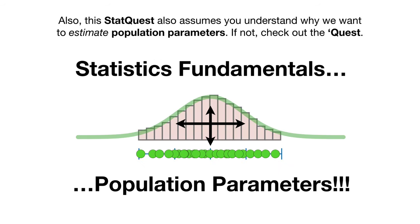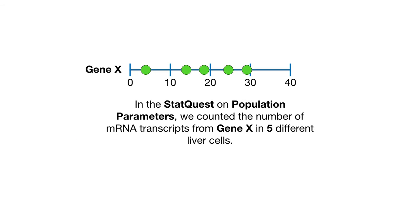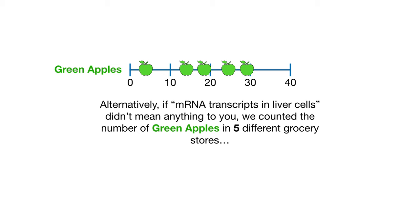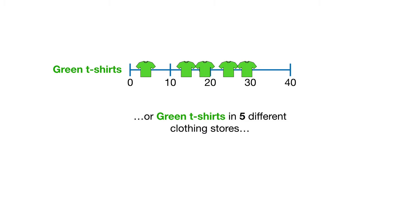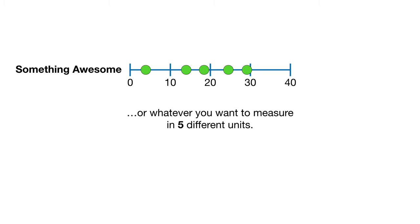Also, this StatQuest assumes you already understand why we want to estimate population parameters. If not, check out the quest. In the StatQuest on population parameters, we counted the number of mRNA transcripts from gene X in five different liver cells. Alternatively, we counted the number of green apples in five different grocery stores, or green t-shirts in five different clothing stores, or whatever you want to measure in five different units.